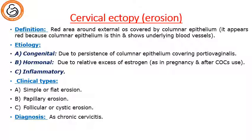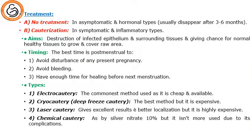The clinical types include simple or flat erosion, papillary erosion with papillary formation, or follicular erosion. The diagnosis and symptoms are the same as chronic cervicitis. Treatment: no treatment if it is asymptomatic and it is the hormonal type, because this hormonal type — during pregnancy and after use of combined oral contraception — will disappear spontaneously after three to six months.